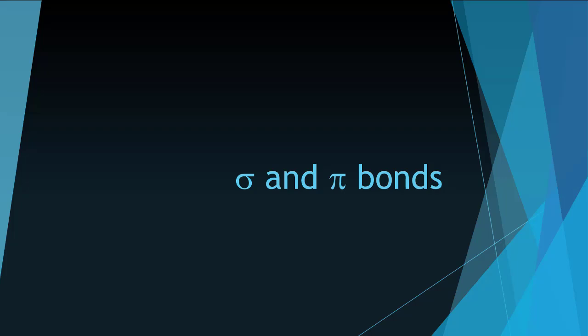Sigma and pi bonds. In this video, we are going to take a closer look at sigma and pi bonds and how they are formed by overlapping atomic orbitals, especially the overlapping of hybrid orbitals.